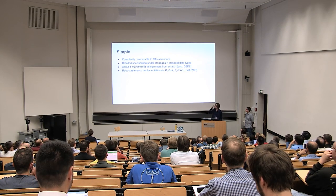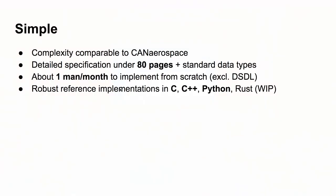How do we make it simple? The complexity of a UAVCAN implementation is comparable to CAN Aerospace. Some of you may be familiar with that protocol. The specification itself is quite compact — and that doesn't mean it's not detailed. My personal assessment is that a sufficiently experienced developer can implement UAVCAN from scratch in approximately one month. For a particular application, this assessment should hold true. The simplicity argument extends not only to implementation but also to usability.